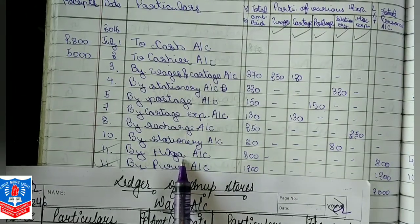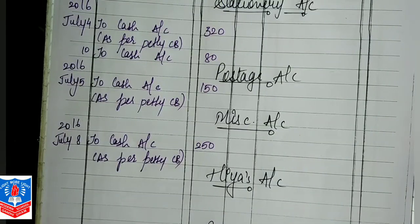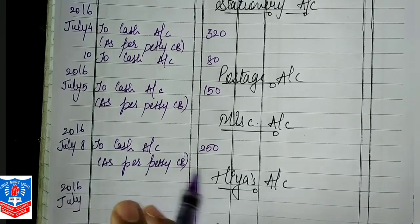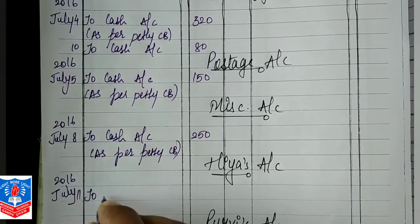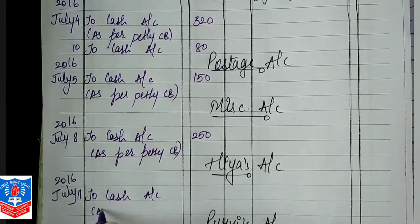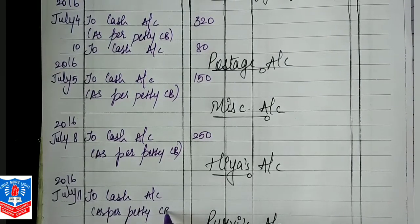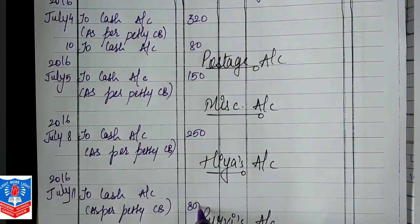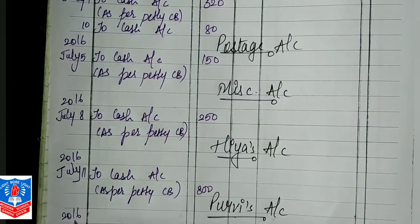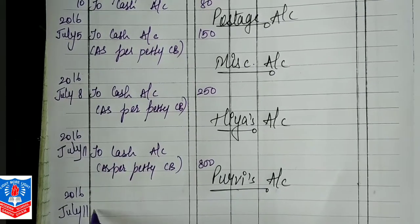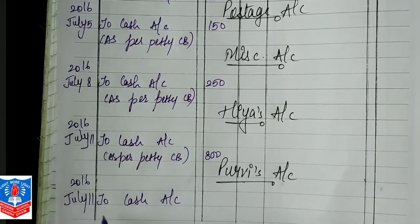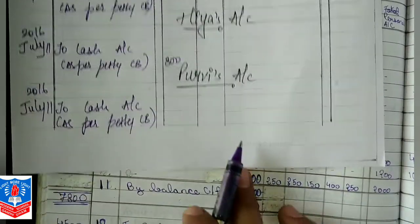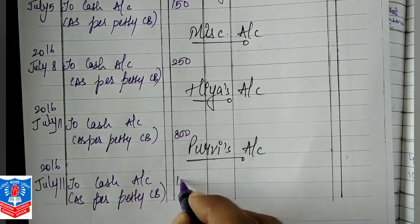Next is Hiyaa's account. You will go to Hiyaa's account and mention the date: 2016 July 11, To Cash Account, as per petty cash book, and the amount for Hiyaa is 800. For Purvi similarly: 2016 July 11, To Cash Account, as per petty cash book, and Purvi's total amount is 1200.